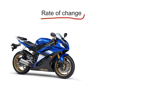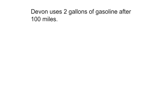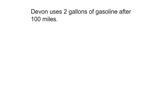Devin has a brand new motorcycle. He fills it up with gasoline and then goes on a trip. Devin uses two gallons of gasoline after 100 miles. What is the rate of change?